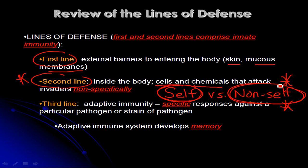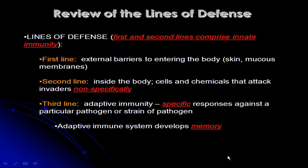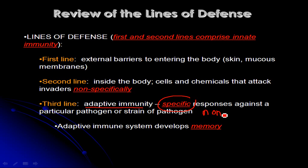The major way the second line distinguishes self from non-self is by recognizing PAMPs on the surfaces of microbes and binding those with pattern recognition receptors on the surfaces of neutrophils and macrophages. Many of the chemicals involved also specifically target various types of pathogens while leaving the cells of our body alone. Now we're going to talk about the third line of defense, which involves adaptive immunity — very specific responses against a particular pathogen, strain of a pathogen, or specific non-self molecules.